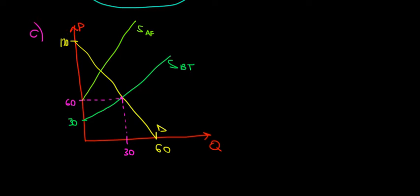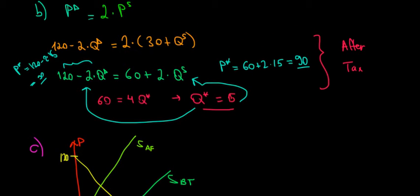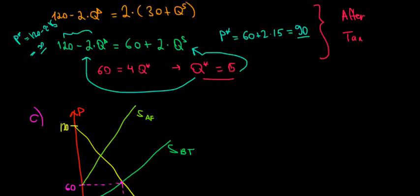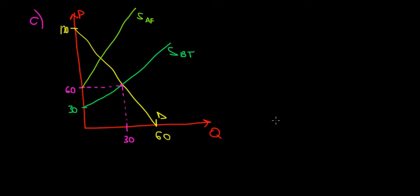The equilibrium price and quantity after tax: the price in equilibrium was 90 with a quantity of 15. Let's draw it on the graph — equilibrium price after tax was 90 and equilibrium quantity after tax was 15.